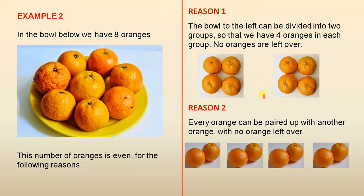Reason two. Every orange can be paired up with another orange with no orange left over. So every orange has a partner. Two, four, six, eight. That proves that eight is an even number.